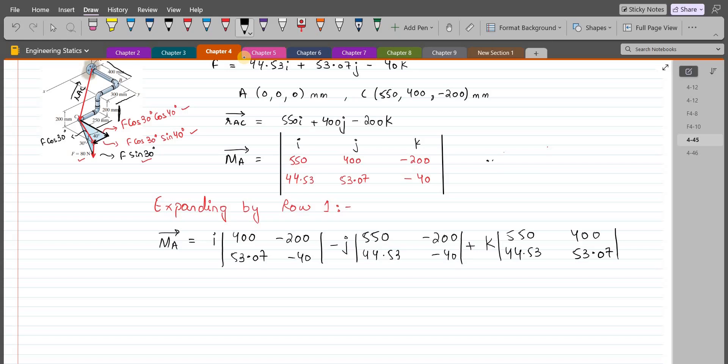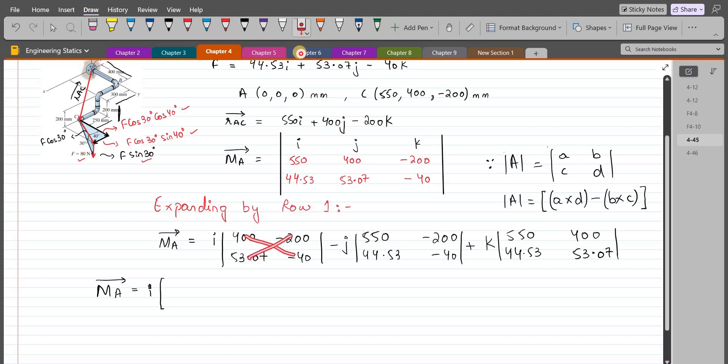Now we have to find the determinant of 2 by 2 matrix for the i, j and k components of the moment vector. For a review, if you have a determinant of 2 by 2, with elements a, b, c and d, the determinant would be a times d minus b times c. We have a d minus b c.